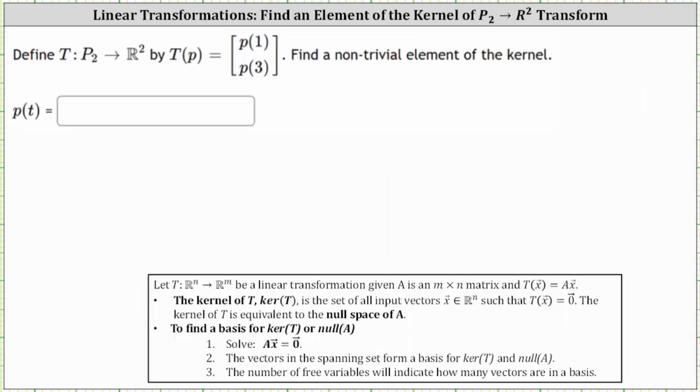The transformation T is from P2 to R2, given by T of p equals the vector p of one, p of three. We're asked to find a non-trivial element of the kernel.